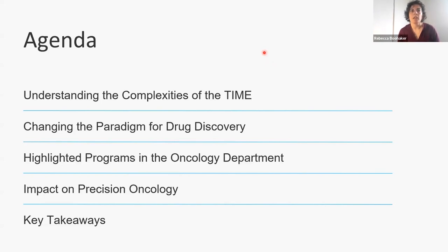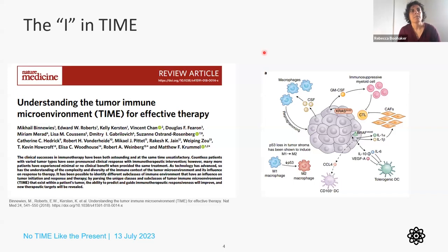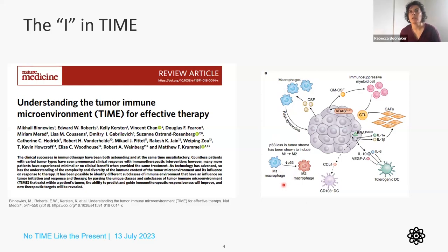So here's what we're going to go over today: a review of recent literature on understanding the immune microenvironment, how we employ this in our drug discovery efforts, three programs in the oncology department that tackle some of these areas, and how this will impact precision oncology. First, understanding the complexities of the tumor immune microenvironment. For anybody not familiar with the immune microenvironment beyond CD8 T cells, I encourage you to review this particular article. As you can see, there's more to the tumor than just the tumor cells.